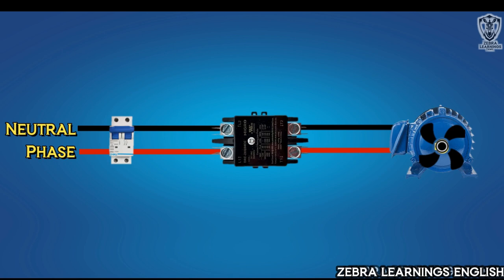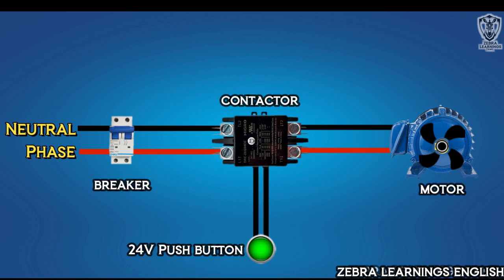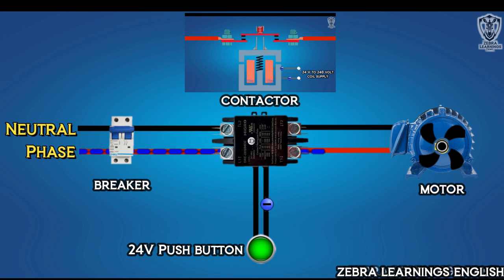Now, let's connect a motor to a power supply through the contactor. A 24-volt power supply can be connected to the contactor coil through a switch. When the switch is turned on, the 24-volt power supply goes to the coil of the contactor, so the coil is energized and an electromagnetic field is generated.